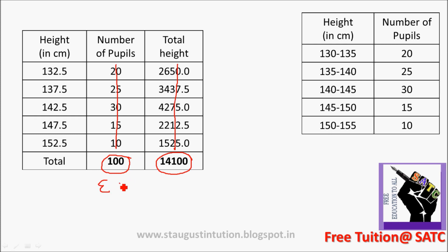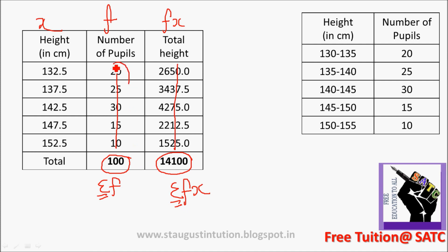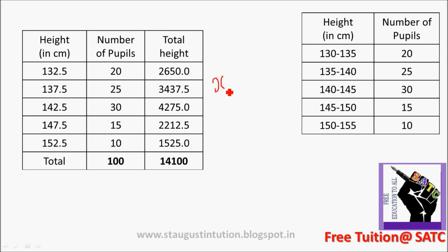The first total is sigma f — that is the frequency total. The second total is sigma fx. Sigma fx is defined by f multiplied by x. The formula for the mean is: x-bar equals sigma fx divided by sigma f. Then we take sigma f and sigma fx, giving sum divided by 100.